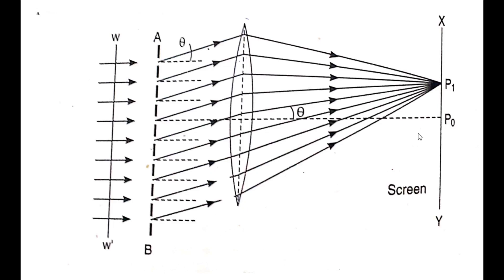The point P0 will be a central maximum. On both sides of P0, at P1 and other points on the left and right, alternative dark and bright bands are obtained.